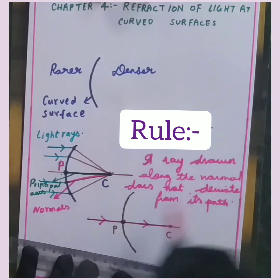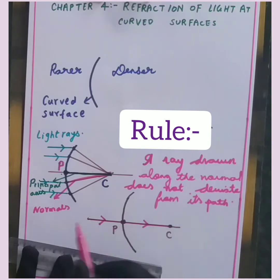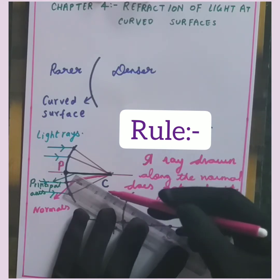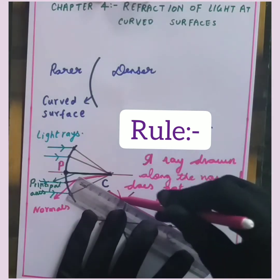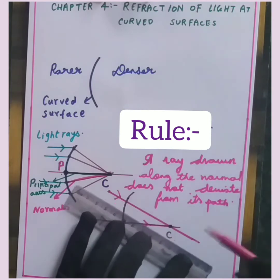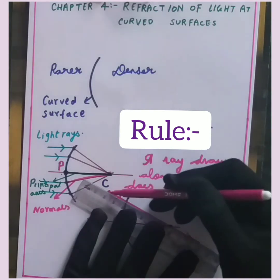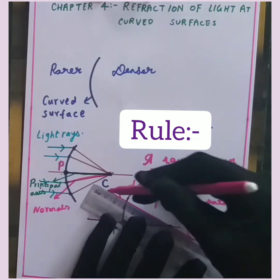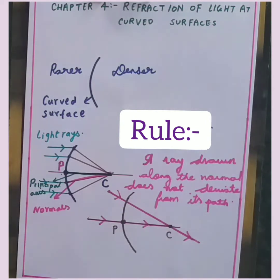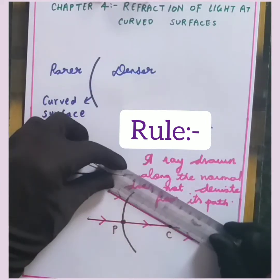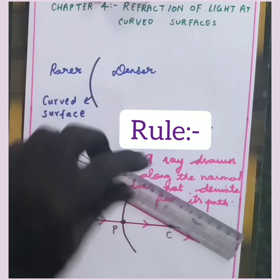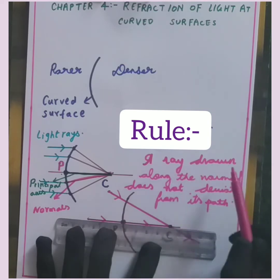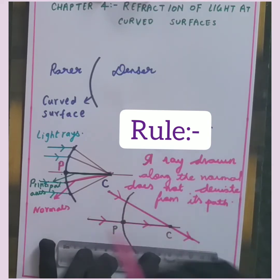Any ray directed towards the normal will not have any deviation. Similarly, a ray passing through the center of curvature also will not have any deviation — it passes straight through without bending. So the important rule is: a ray drawn along the normal does not deviate from its path.